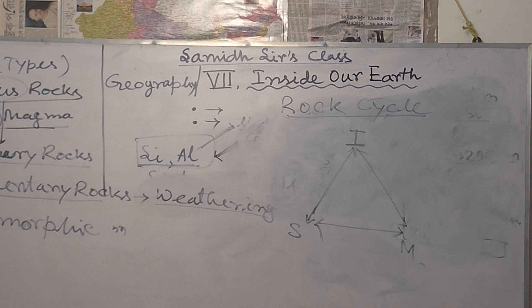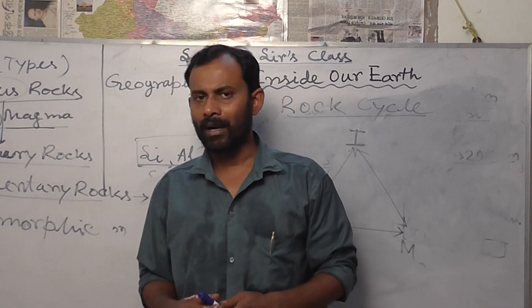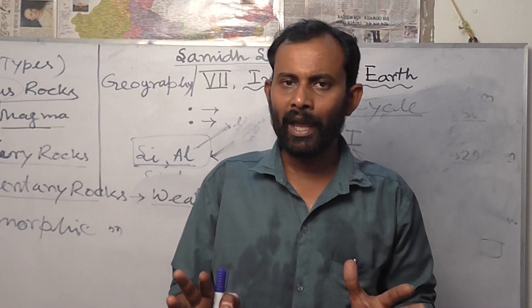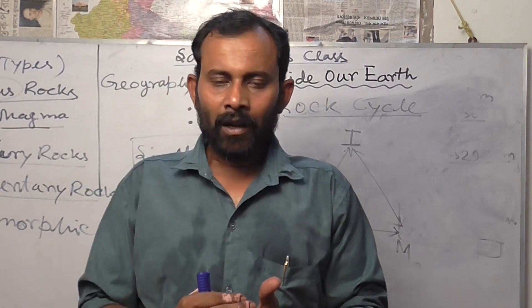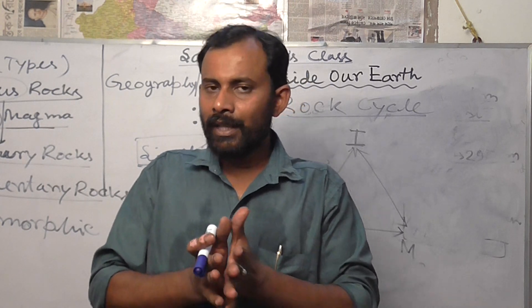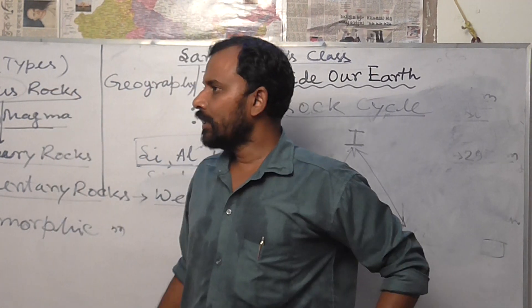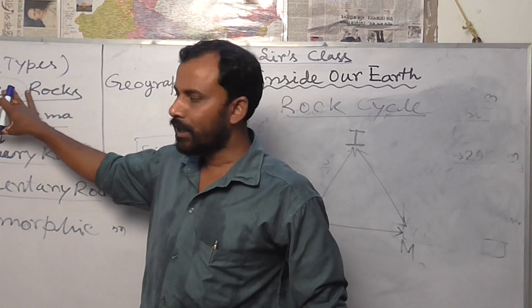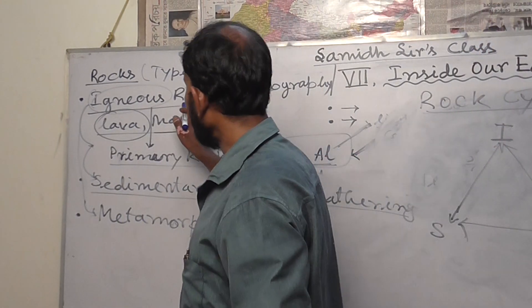Detailed characteristics of igneous rock: since it is made up by lava and magma, there is no way of having any organic matter, as lava and magma are very hot — no living organism can survive. We cannot find any kind of layers in igneous rock. The porosity — the gap between two particles — is very less because it is made up of very fine materials. Igneous rock is clayey in nature.